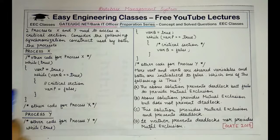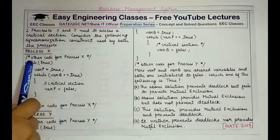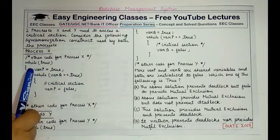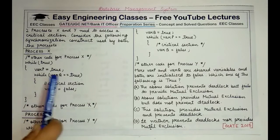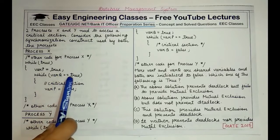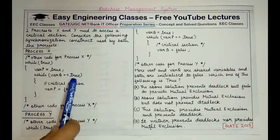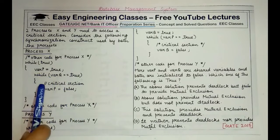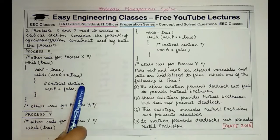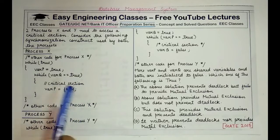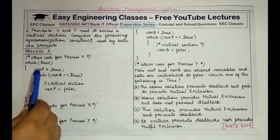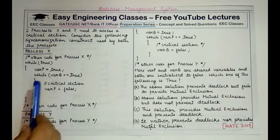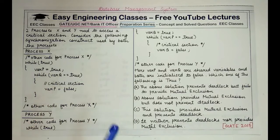In Process X, after entering the outer while(true) loop, variable var_p is set to true. Then an inner while loop checks if var_q equals true; if so, the process enters the critical section. After executing the critical section, var_p is set back to false.